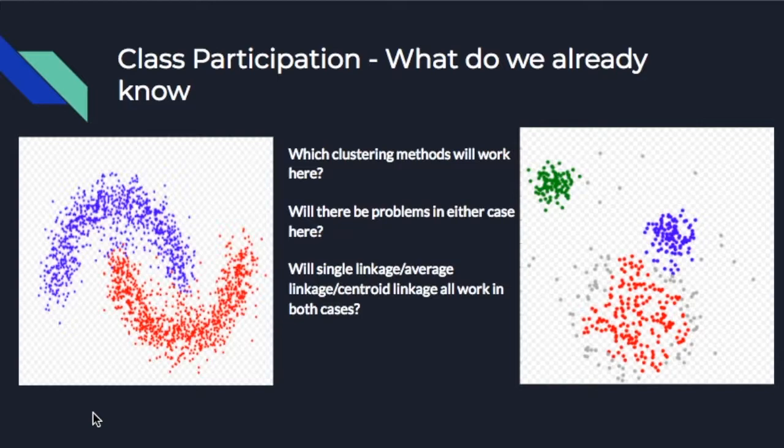So let's review a little bit of what we already know. Different data sets require different types of clustering depending on what you would like to learn from the data. We have learned methods ranging from spectral clustering to various types of agglomerative clustering, and depending on what your endgame is, you need to choose a different clustering method in order to get the results that you wish for.